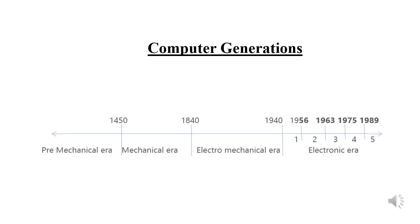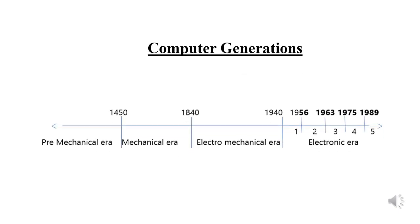In the last lesson, we learned that the history of computers is divided into four eras, and the era we are in today is known as the electronic era. In the electronic era, computer technology began to develop very rapidly. Because of this, the computers used in the electronic era were divided into five generations.